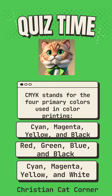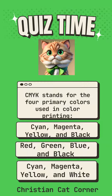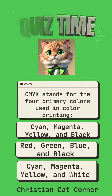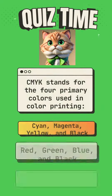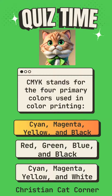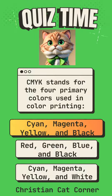CMYK stands for the four primary colors used in color printing. Is it: Cyan, Magenta, Yellow and Black; Red, Green, Blue and Black; or Cyan, Magenta, Yellow and White? Answer: Cyan, Magenta, Yellow and Black.